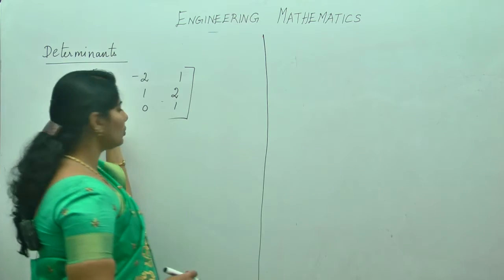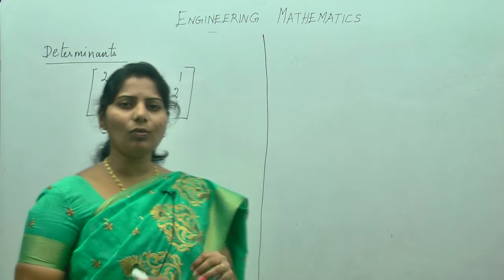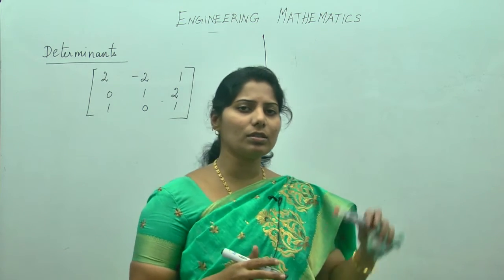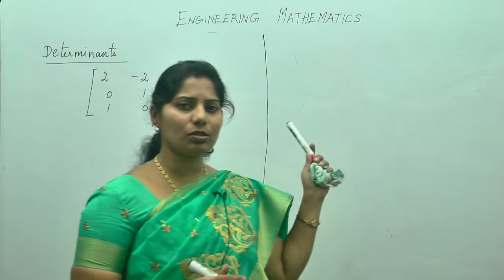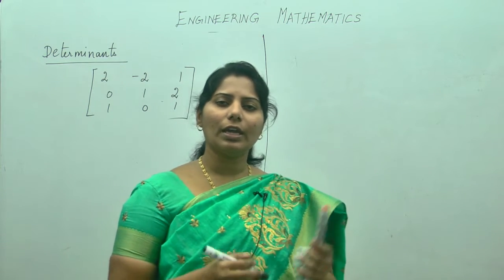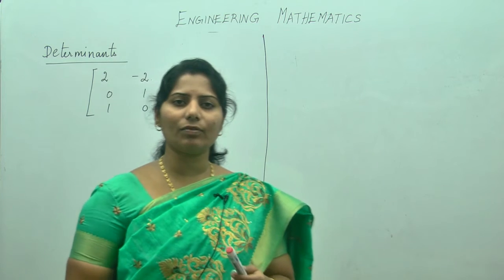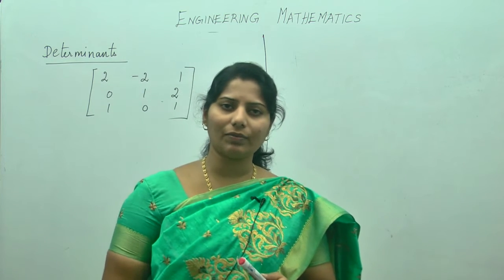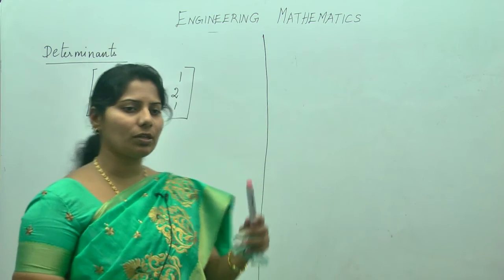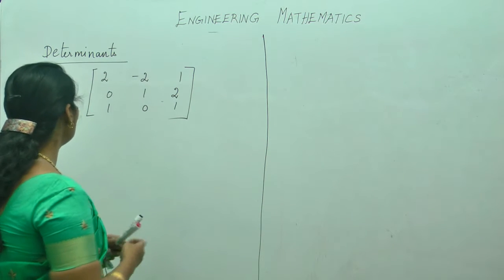Now I am going to teach you what is a determinant and how will you find it. This determinant is used to find out the inverse of a matrix and also to find eigenvalues, eigenvectors, and then diagonalization of a matrix — for all these we will be using it.